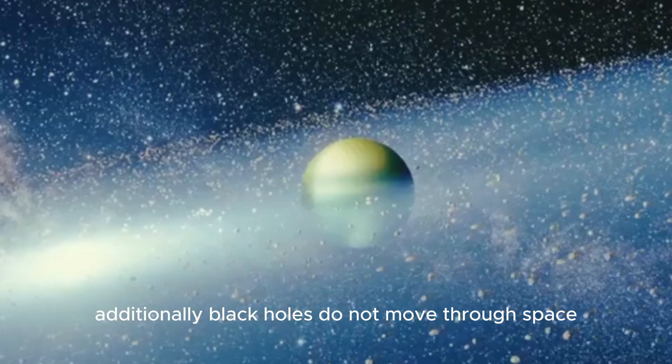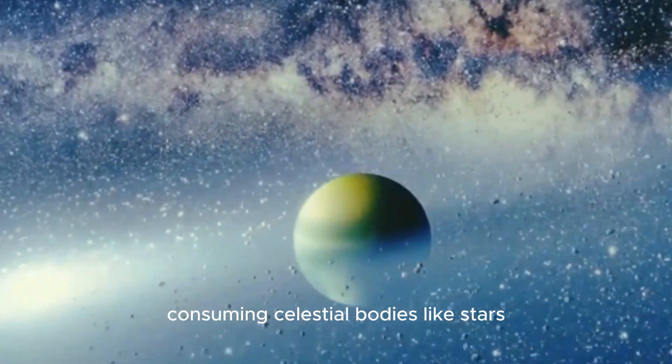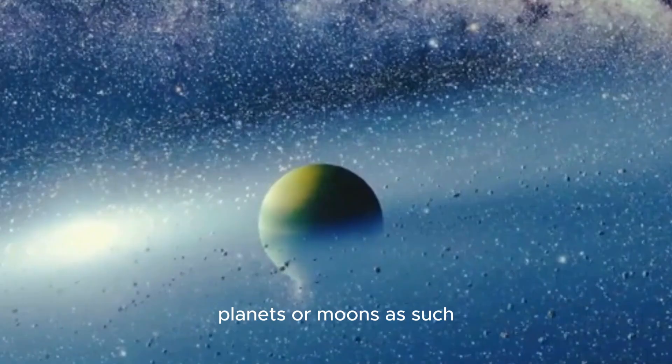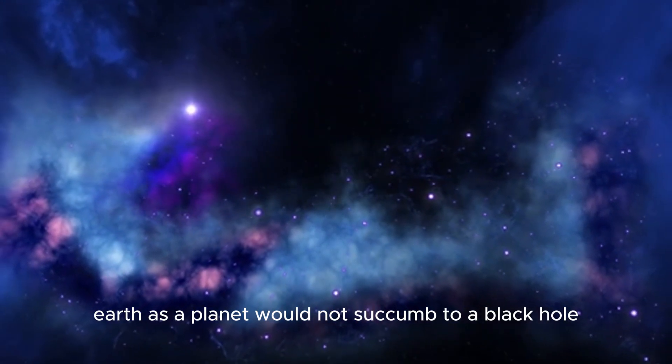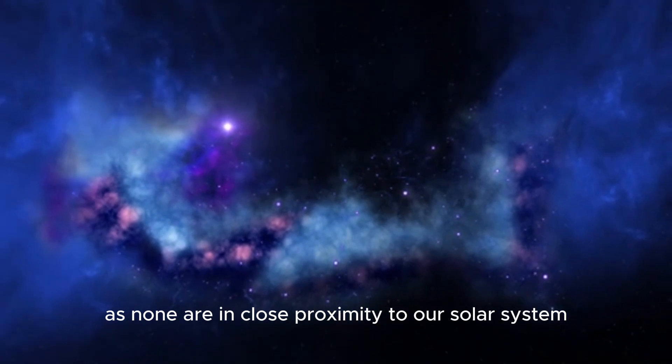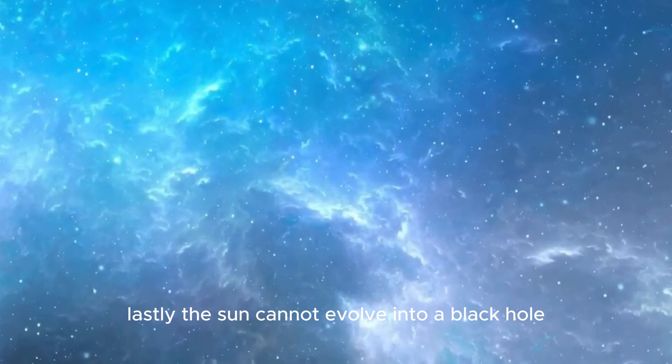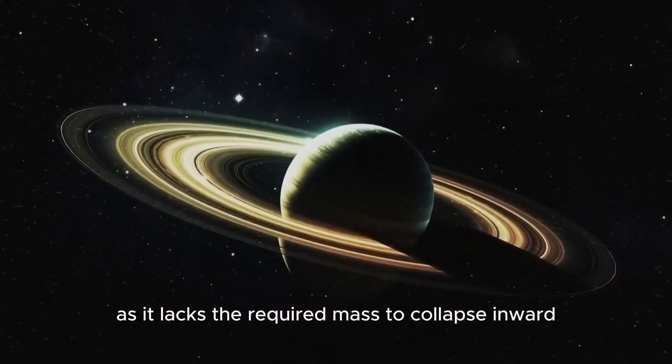Additionally, black holes do not move through space consuming celestial bodies like stars, planets, or moons. As such, Earth as a planet would not succumb to a black hole as none are in close proximity to our solar system. Lastly, the Sun cannot evolve into a black hole as it lacks the required mass to collapse inward.